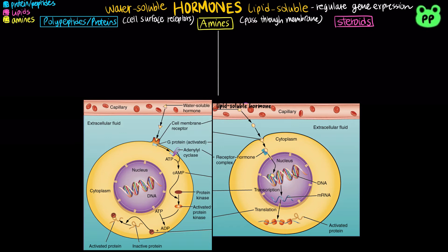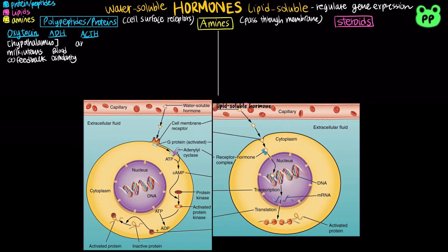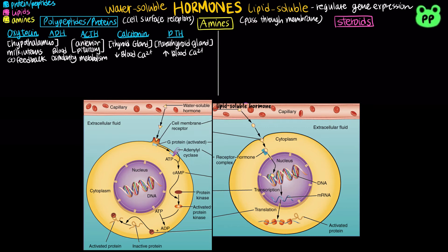All polypeptide or protein hormones are water-soluble, which include oxytocin secreted by the hypothalamus, which functions in milk production and uterine contraction with a positive feedback loop. Antidiuretic hormone is also secreted by the hypothalamus and functions in regulating blood osmolarity. Adrenocorticotropic hormone is released by the anterior pituitary gland and functions in regulating metabolism. Calcitonin is released by the thyroid gland and functions in decreasing blood calcium. Parathyroid hormone released by the parathyroid gland increases blood calcium concentration.